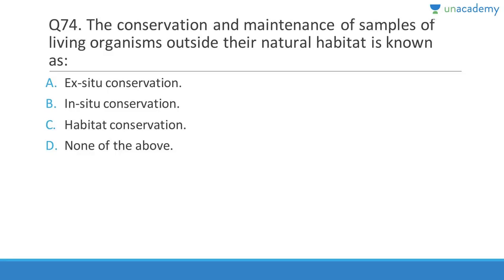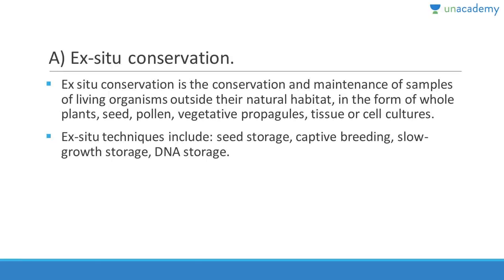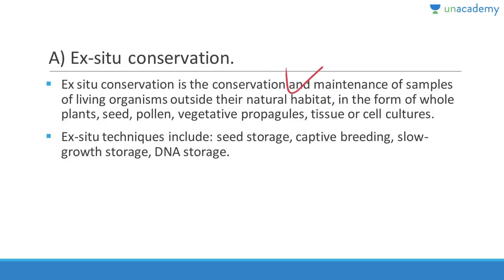Question 74: The conservation and maintenance of samples of living organisms outside their natural habitat is called ex-situ conservation. In-situ is inside the natural habitat, ex-situ is outside. Ex-situ conservation can be done in zoological gardens, botanical gardens, zoos, DNA storage, slow growth storage, captive breeding, and seed storage. These are not in wildlife sanctuaries, national parks, or sacred groves.